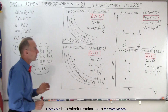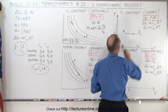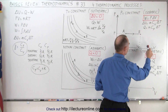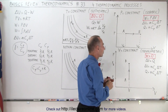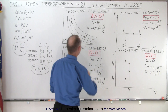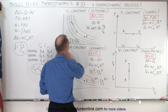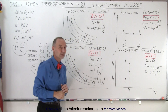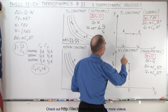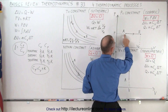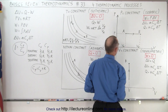The four thermodynamic processes are: the isobaric process where the pressure remains constant; the isovolumetric (or isochoric) process where the volume is constant; the isothermic process where the temperature is constant; and the adiabatic process where none of the three state variables are constant. If the pressure remains constant, we go from one state of the gas to another and the line is horizontal because the pressure cannot change.